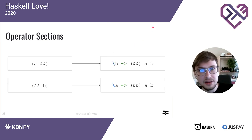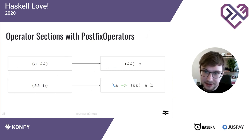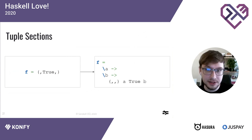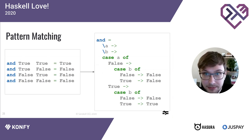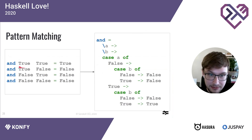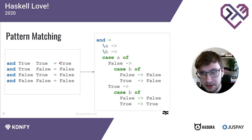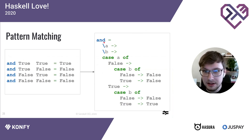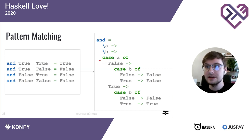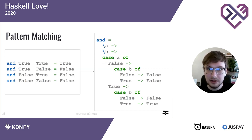Operator sections are desugared into lambdas — unless you enable PostfixOperators, in which case left sections are eta-reduced. Tuple sections are also desugared into lambdas. Multi-argument pattern matches are translated into nested case expressions. In surface Haskell we can write a function equation that pattern matches on several arguments simultaneously, but in Core we must bind each argument by a separate lambda and scrutinize each separately by a separate case expression.